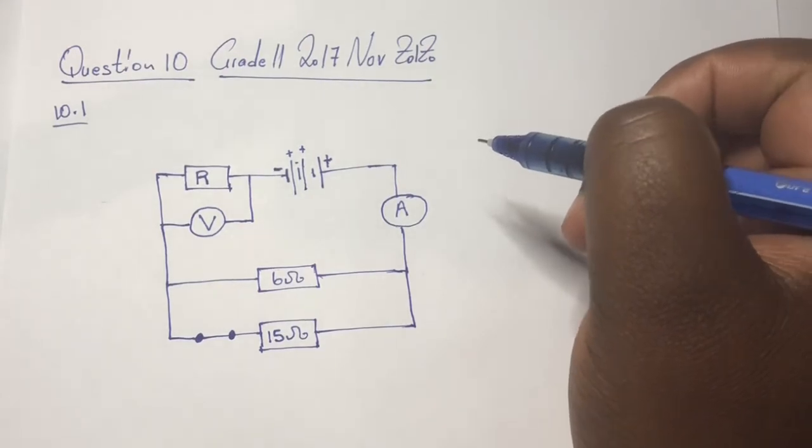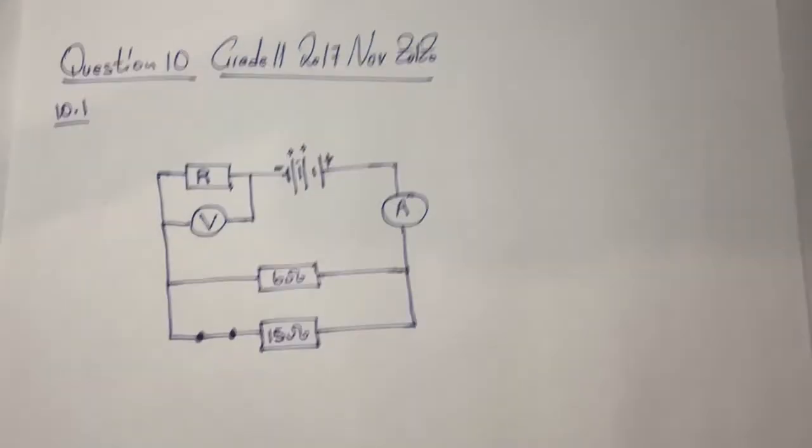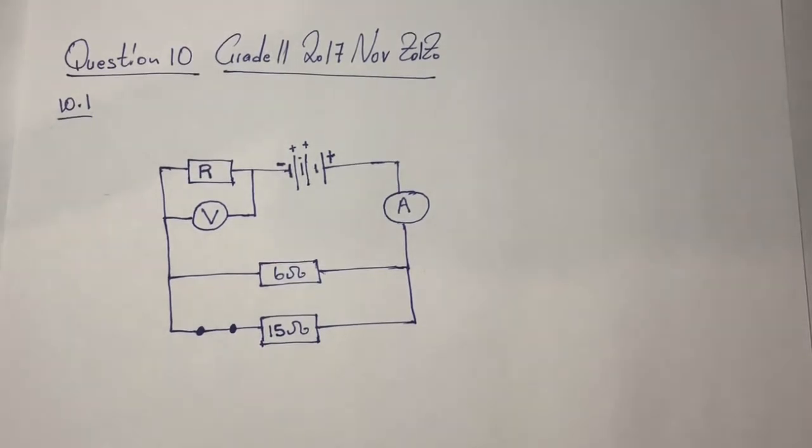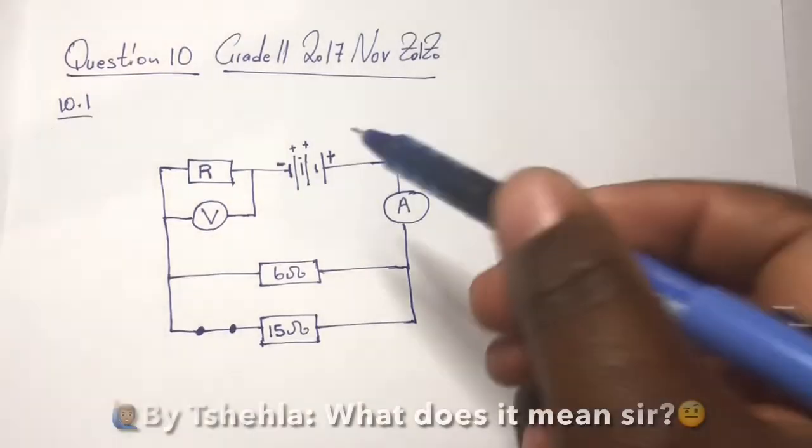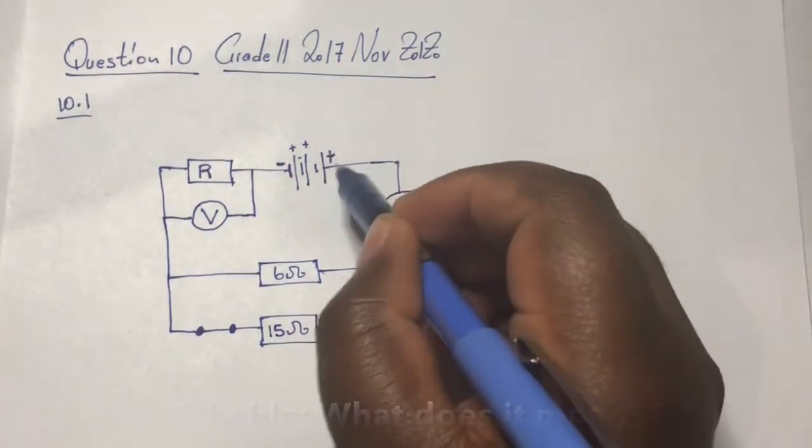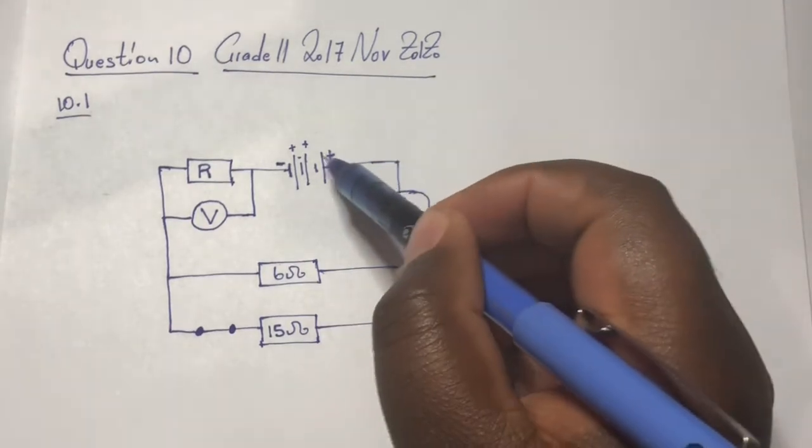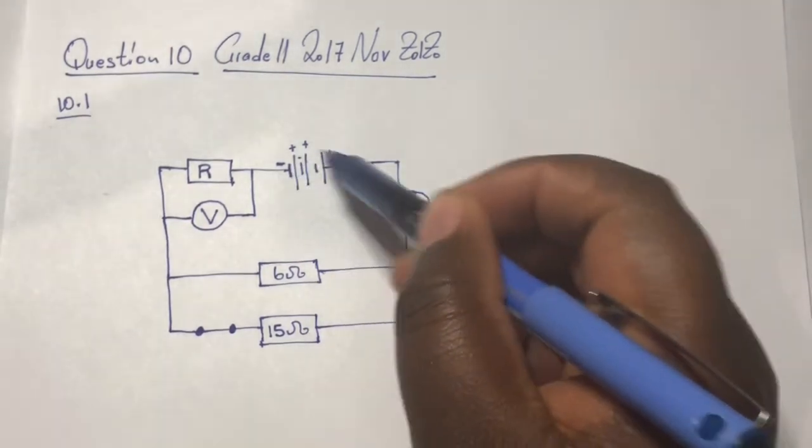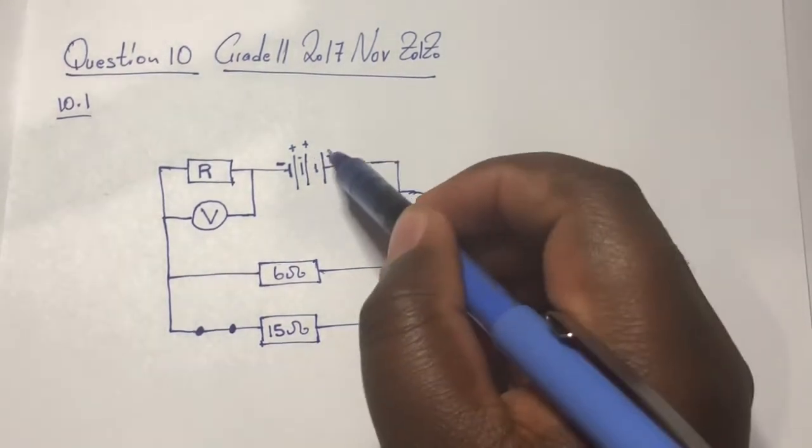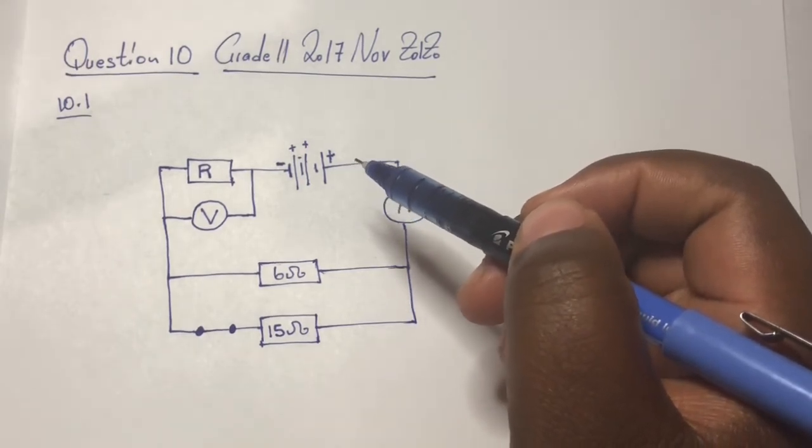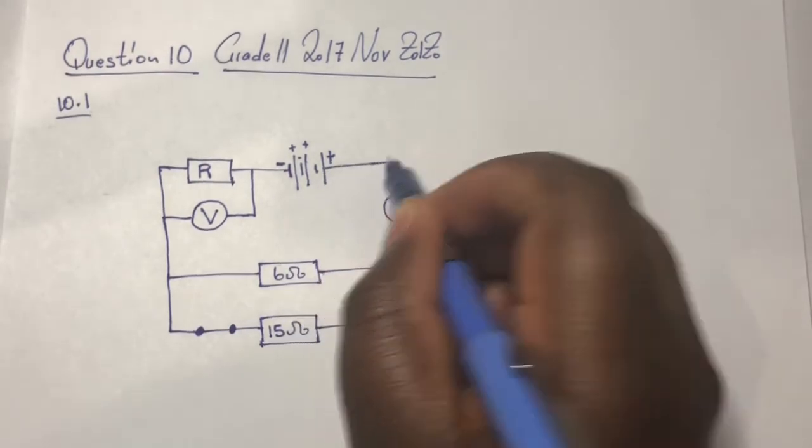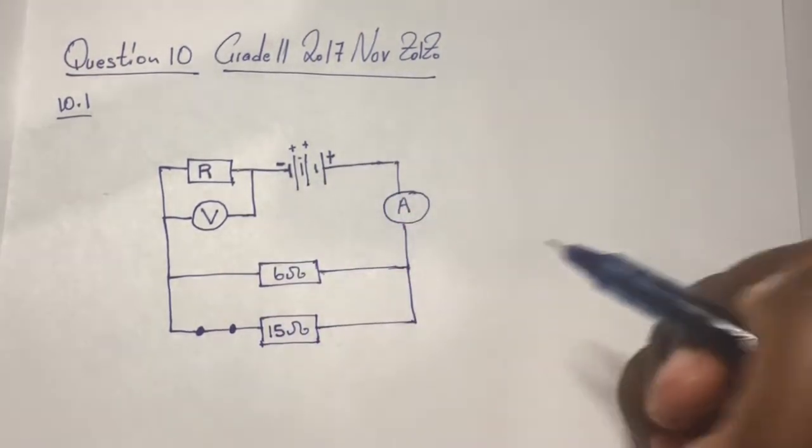Let me quickly check on the statement. You can see they're saying the resistance of the battery and the wires can be ignored. When you get to grade 12, that's when in most cases you'll be given the internal resistance of the battery. So in this case, they're saying you can ignore the internal resistance of the battery, and you can also ignore the resistance as a result of the wires.